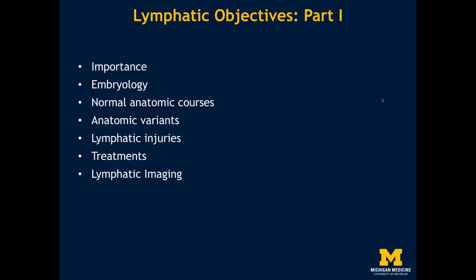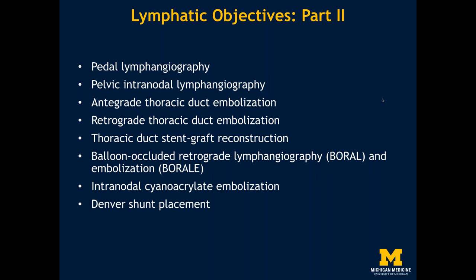Tonight's goals include discussing the importance of the lymphatic system and its various structures, how it forms embryologically, the normal structures and variants we see, how the lymphatic system becomes injured and what we can do about it, new imaging techniques, and then Ravi will cover a host of approaches including antegrade approaches, retrograde access, stent graft techniques, Boral and Boral-E techniques, glue embolization, and Denver shunts.